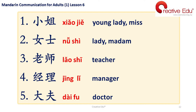Let's go through the key vocabularies once again. Number 1: 小姐 — Young lady, Miss. Number 2: 女士 — Lady, Madam. Number 3: 老师 — Teacher. Number 4: 经理 — Manager.